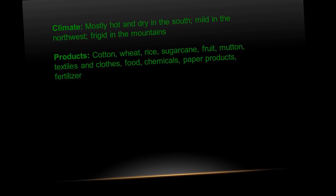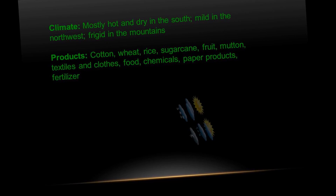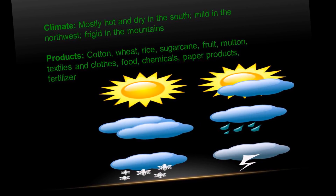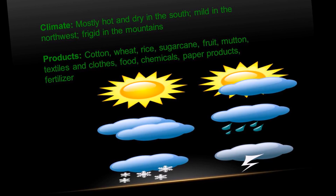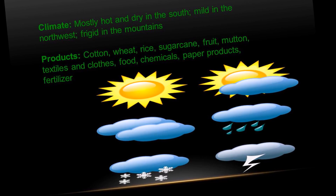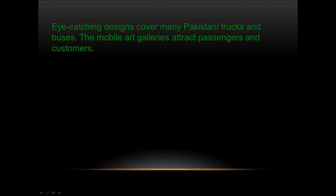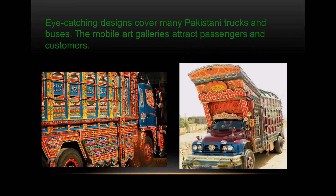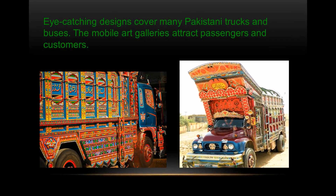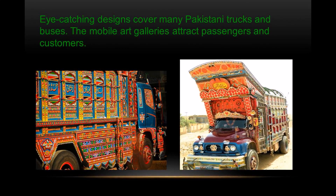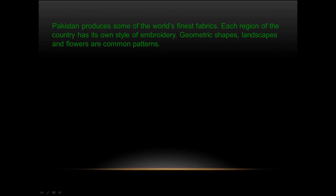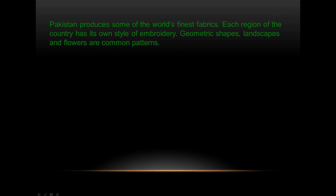Products include cotton, wheat, rice, sugar cane, fruit, mutton, textiles and clothes, food, chemicals, paper products and fertilizers, and so on. Eye-catching designs cover many of Pakistan's trucks and buses. These mobile art galleries attract passengers and customers. Pakistan also produces some of the world's finest fabrics.